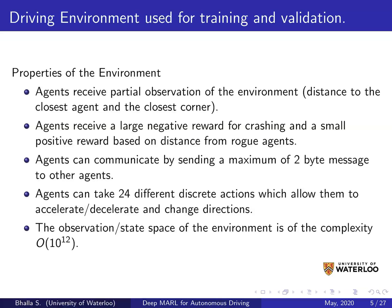The agents receive a large negative reward when crashing into an edge of the treadmill or with another agent. Agents can communicate by sending a maximum of two-byte message; the message is discrete and one-hot encoded, with only a single bit on in any given message. Agents can take up to 24 different discrete actions, which changes directions and provides multiple levels of acceleration and deceleration. The observation and state space was purposefully kept quite large, on the order of 10 to the 12th.